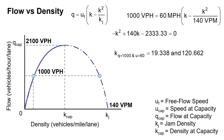We can see this also on our diagram, drawing down from our 1000 vehicles per hour. We have the 19.3 vehicles per mile in our under capacity situation, and then in the over capacity situation we're at 120.7 vehicles per mile. This is what it looks like on our graph of flow versus density.